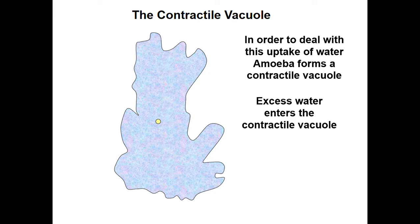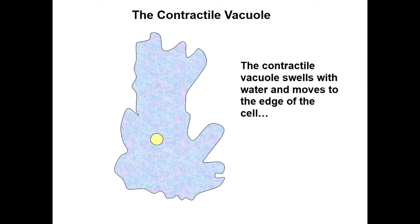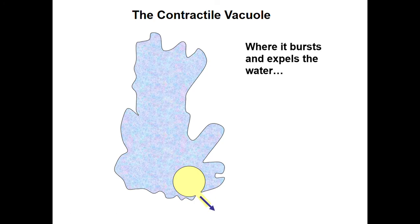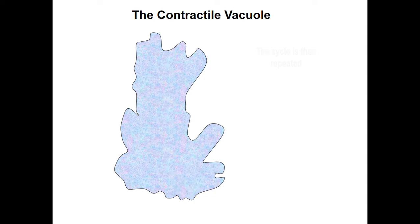The food vacuole comes from the outer layer to the inner layer, but the contractile vacuole forms from the inner layer as a bubble that captures excess water. The bubble gets bigger and bigger and then gets pushed out to the outermost layer of the amoeba, where it bursts open. This way, the excess water that was absorbed by the amoeba is pushed back out to the outer surface, helping the cell sustain itself and maintain osmotic balance.